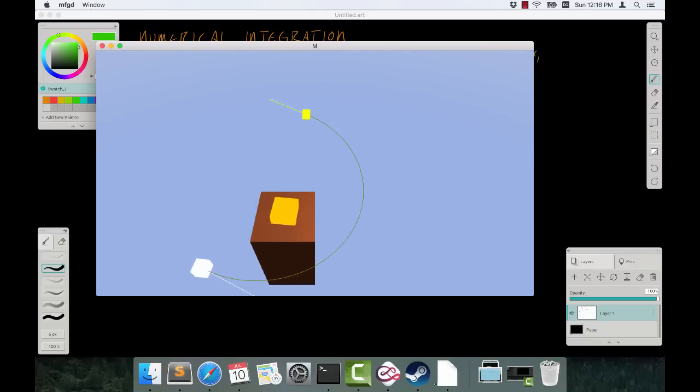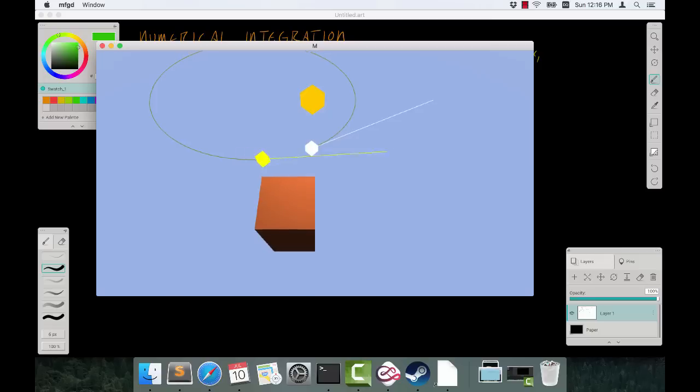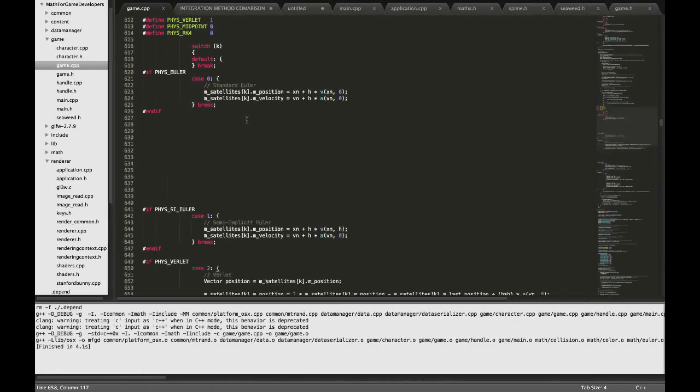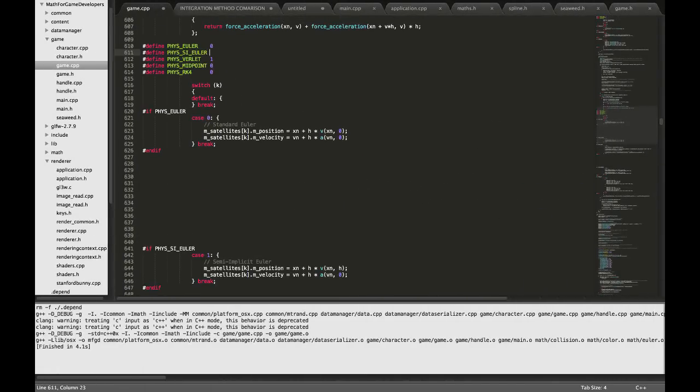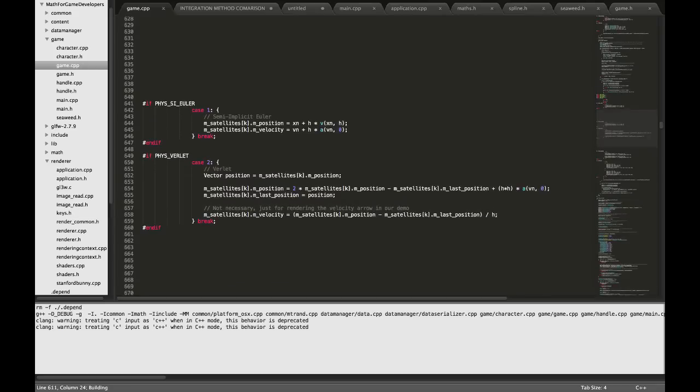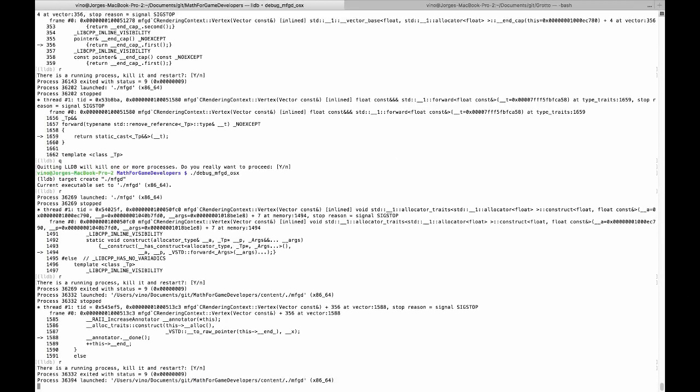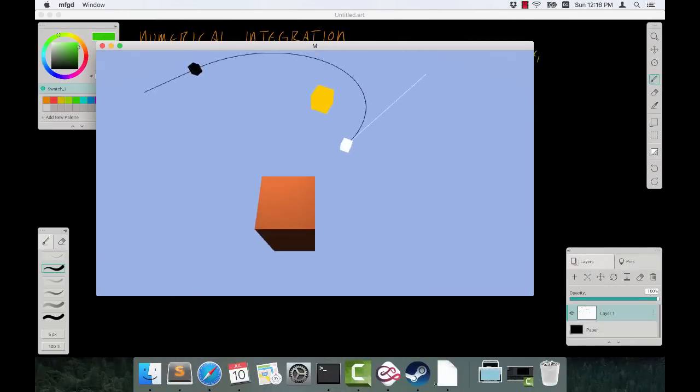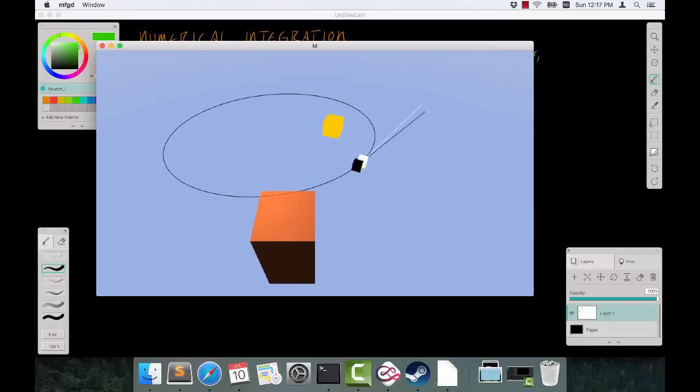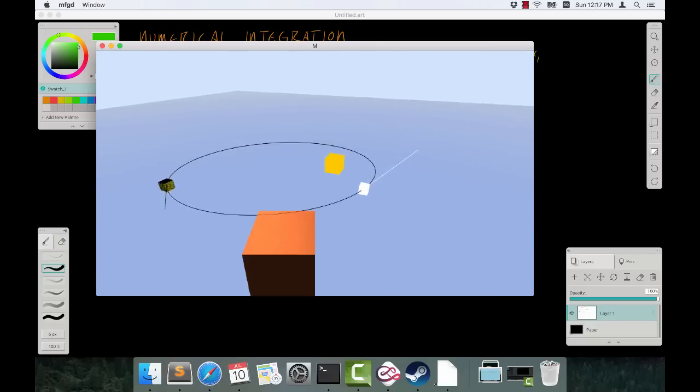So here is Verlet in action. It's making an elliptical orbit of our star here. And actually for comparison, let me also turn on semi-implicit Euler as well that we did last time. So that we can see both of them side by side and we can kind of compare.